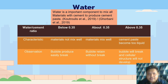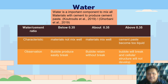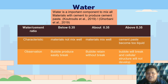Now we look at water. Water is an important component for mixing all materials with cement to produce cement paste. If the water-cement ratio is below 0.35, the materials will not mix well and the bubbles produced will easily break. If the water-cement ratio is exactly 0.35, the materials mix very well and bubbles are retained without breaking. If the water-cement ratio is above 0.35, the cement paste becomes too liquid and cannot hold the bubbles, so the cellular structure will not develop. Therefore, 0.35 is the optimum value for the water-cement ratio.